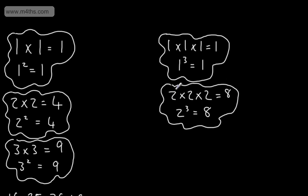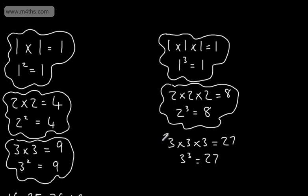If we think about the next one, we will have 3 multiplied by 3 multiplied by 3. We know that gives us 9, so this is going to give us 27. 1 is a cube number, 8 is a cube number, 27 is a cube number. So 3 cubed is 27. In a later video we will look at powers. This is the number we're multiplying, and this is how many of them we need. So for example, if I did 2 to the power of 4, I'd have 2 times by 2 times by 2 times by 2.